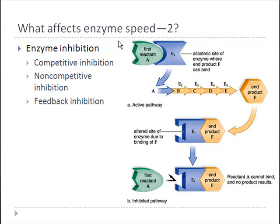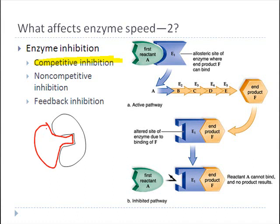There are two types of inhibition. The first is called competitive inhibition. Enzymes have an active binding site. If you take a molecule that is not the one the enzyme is supposed to act on, but it has a similar enough shape to fit into that active binding site, you've literally plugged up that active binding site so no substrate can get in — that's competitive inhibition. You've out-competed the substrate to bind at the active binding site.